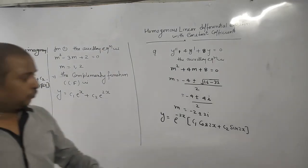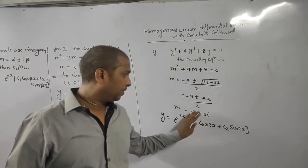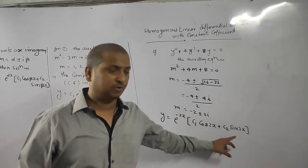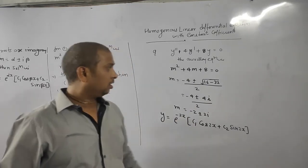In case, if roots are purely imaginary, purely imaginary means minus 2 will be 0, then e to the power 0x becomes 1, so only this one remaining.